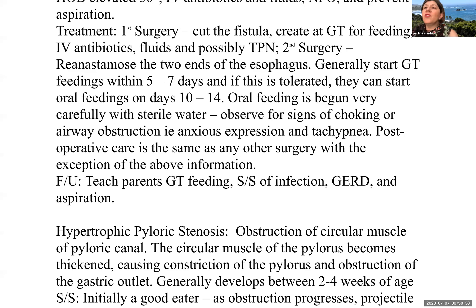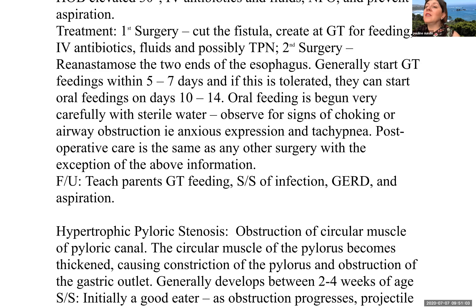Treatment: the first surgery involves cutting the fistula and creating a gastrostomy tube for feeding. They will receive IV antibiotics, fluids, and possibly TPN. The second surgery reanastomoses the two ends of the esophagus, generally starting gastrostomy tube feedings within five to seven days; if tolerated, oral feedings begin 10 to 14 days later. Oral feeding is begun carefully with sterile water, observing for choking or airway obstruction — an anxious expression or tachypnea would signal this. Post-operative care is standard, with attention to gastrostomy tube management. Parents must be taught how to manage the gastrostomy tube, tube site, and feedings, and must monitor for signs and symptoms of GERD and aspiration.